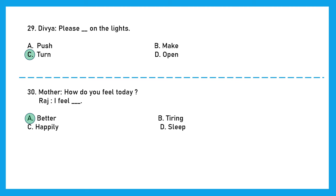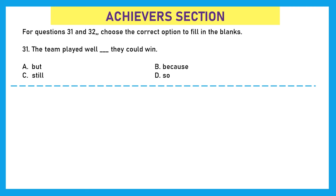Moving to the last section, that is of achiever section, and it holds double marks for each question. For questions 31 and 32, choose the correct option to fill in the blanks. Question 31. The team played well blank they could win. But they could win, because they could win, still they could win, or so they could win. Now here we are talking about the reason, okay. So we will use so. The team played well, so they could win.